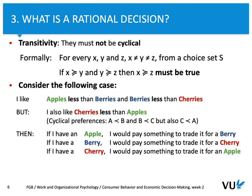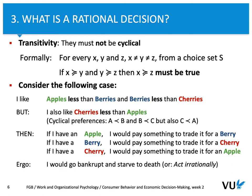Based on this example, if I have an apple, I would pay something to trade it for berries, because I prefer berries more. If I have a berry, I would pay something to trade it for a cherry, because I prefer cherries more than berries. But this preference implies also the third: if I have a cherry, I would pay something to trade it for an apple, because I prefer apple in this case. The conclusion is that if the decision is cyclical, basically I would either go bankrupt or starve to death, because this action can be considered irrational.